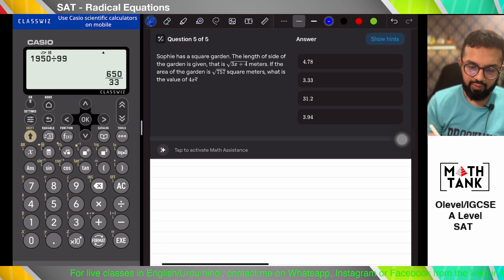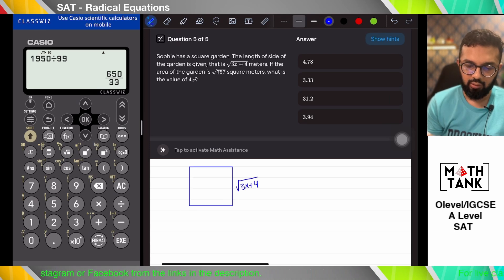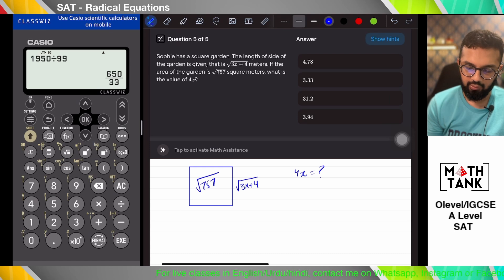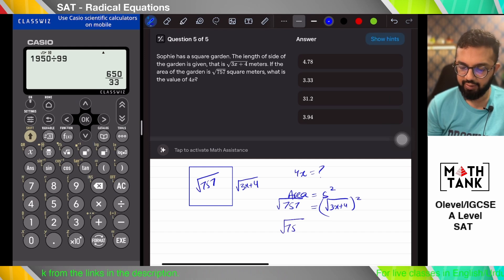Question number five. Sophie has a square garden. The length of the side of the garden is root of 3x squared plus 4. The area of the garden is root of 757. What is the value of 4x? So area equals S squared. Area is root of 757, and 3x plus 4 squared. The root of 757.